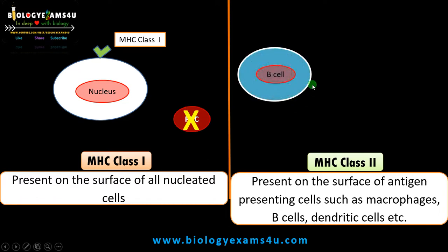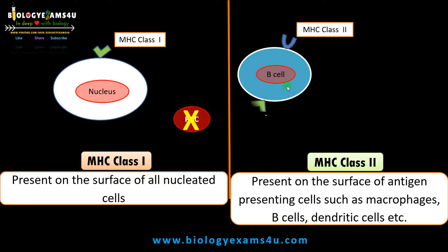MHC class 2 is present on antigen presenting cells like B cells, macrophages, and dendritic cells. These are specialized immune cells that process and present antigen on MHC class 2 receptor. Since these are also nucleated cells, they also have MHC class 1 receptor.